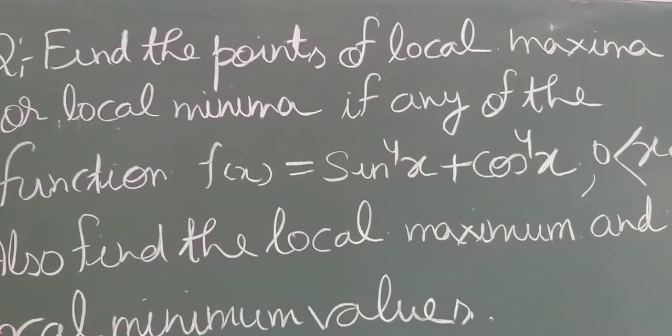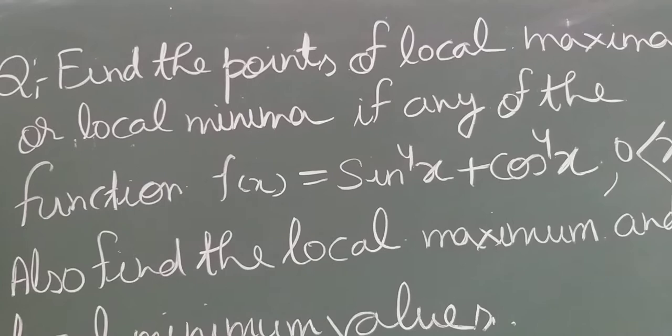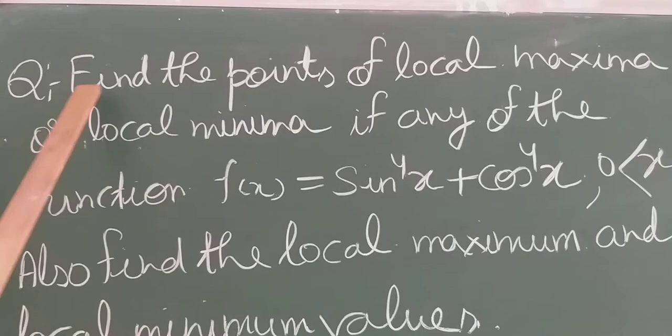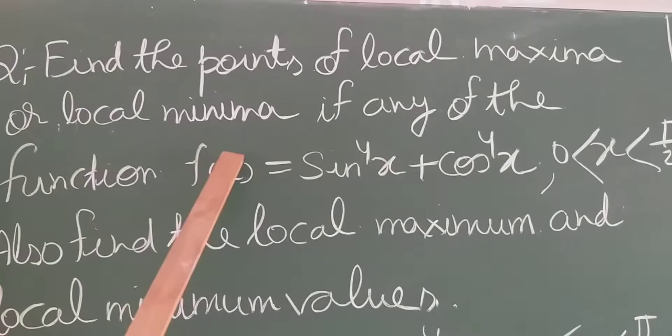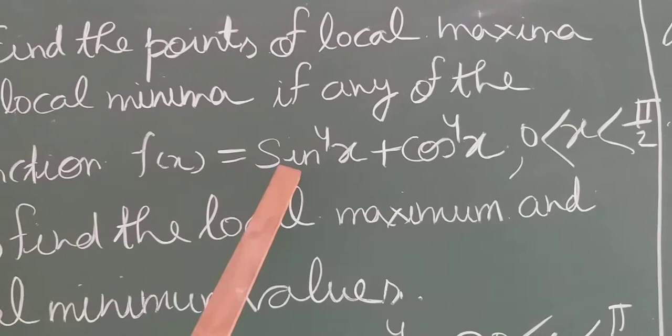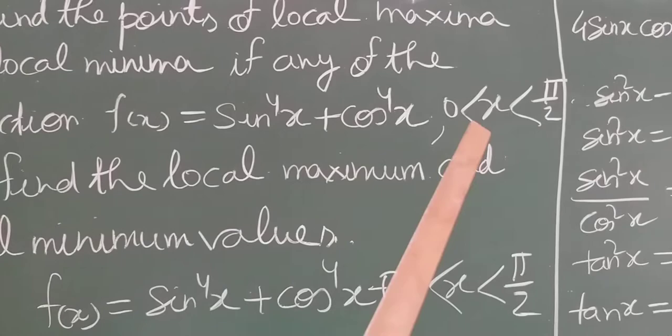Let's solve more questions of local minima and local maxima. The question is: find the point of local maxima or local minima, if any, of the function f(x) = sin⁴x + cos⁴x, where x belongs to (0, π/2).